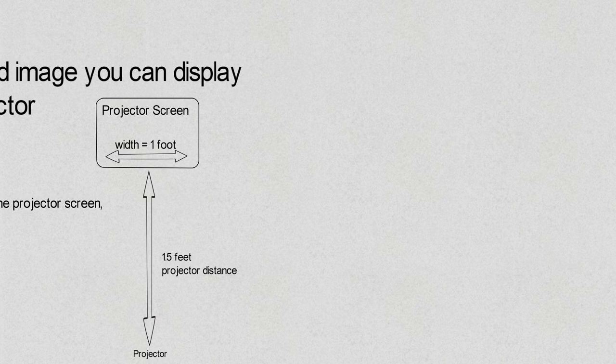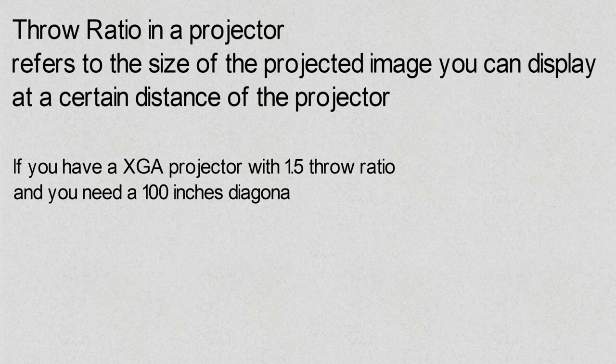If you have an XGA projector with a 1.5 throw ratio and you need a 100 inches diagonal projected image, the projector distance should be 10 feet away from the projected screen.